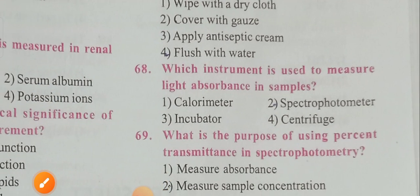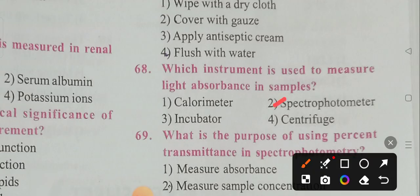Question 68: Which instrument is used to measure light absorbance in samples? Options: colorimeter, spectrophotometer, incubator, centrifuge. Option 2 is the correct answer — spectrophotometer.